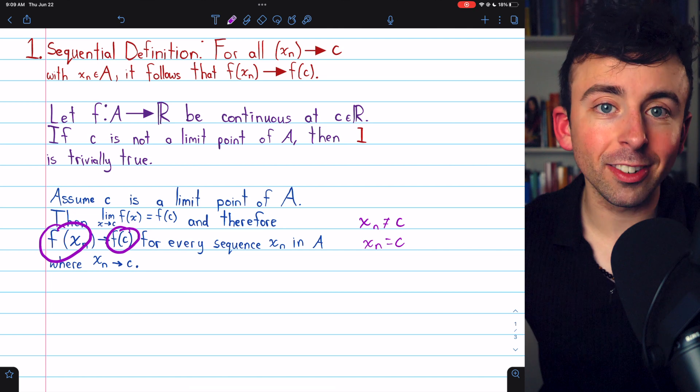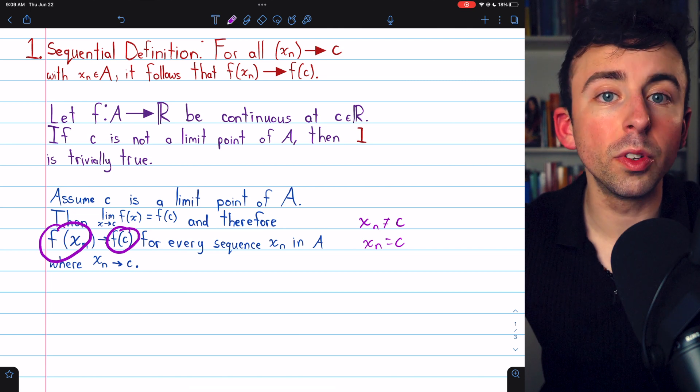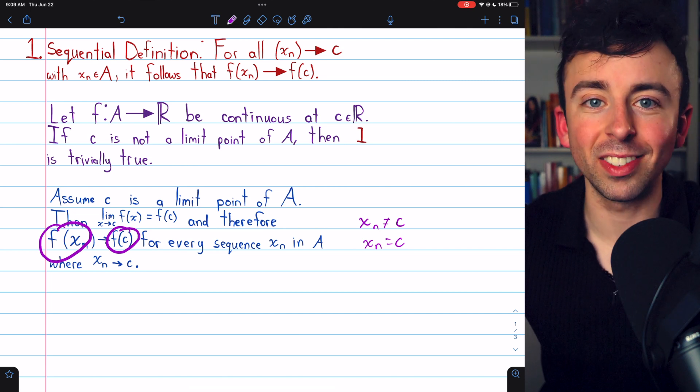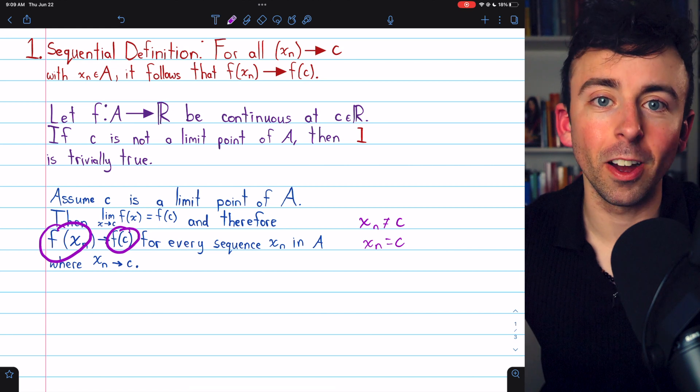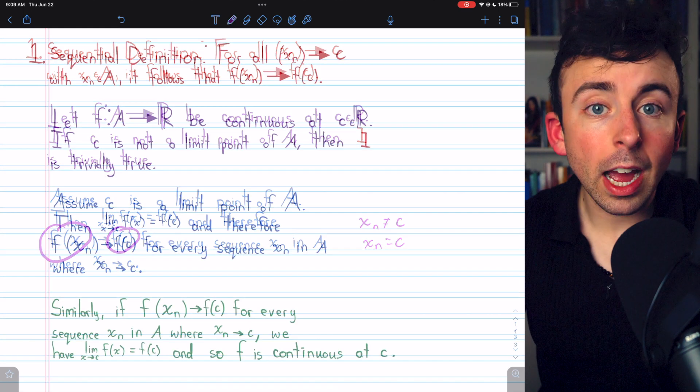Point being, we're actually allowing sequences here whose terms are f of c. Those certainly are not going to cause any problems regarding the convergence.